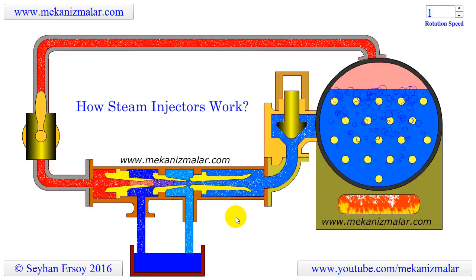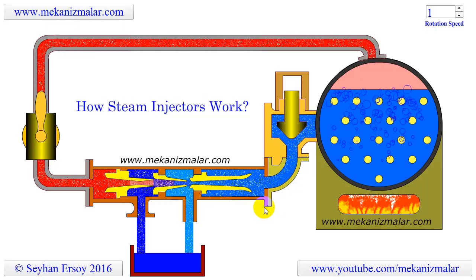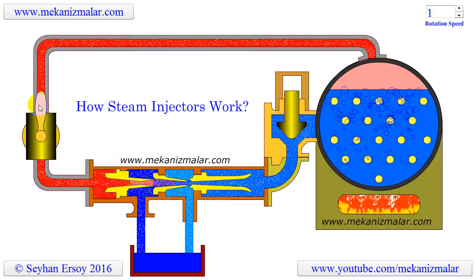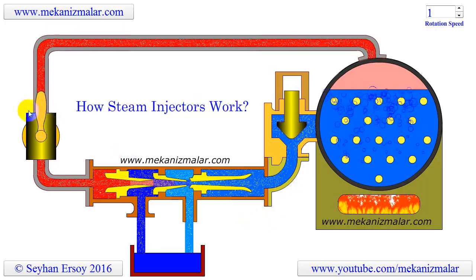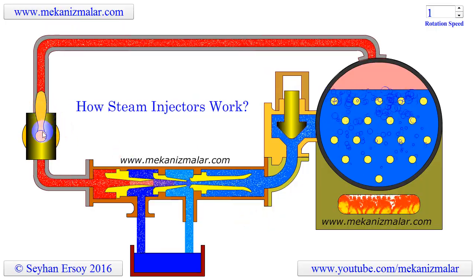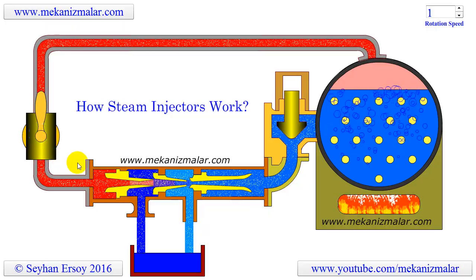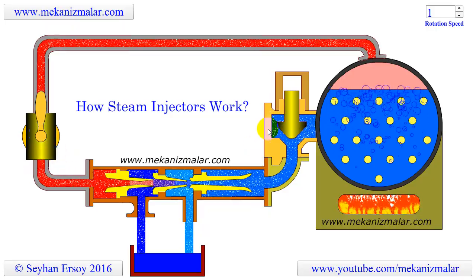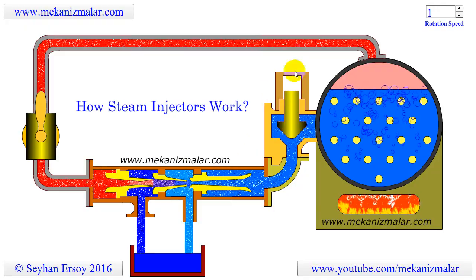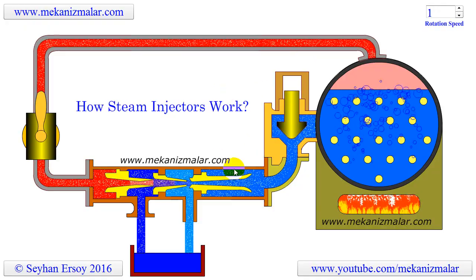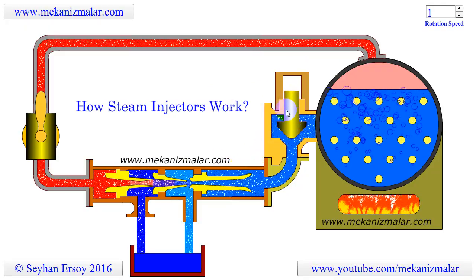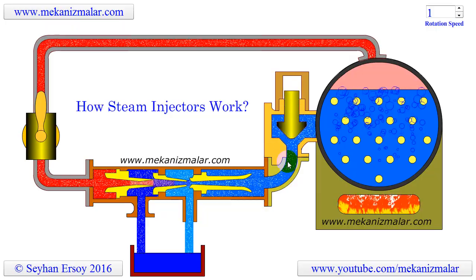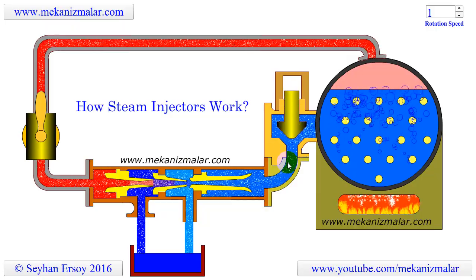The steam injector's operation can be interrupted by turning the valve manually or automatically off. This will cut the flow of steam to the injector, and in turn the water flow from the reservoir will stop. During this time, the check valve shown here will prevent the boiler water from escaping to the reservoir.